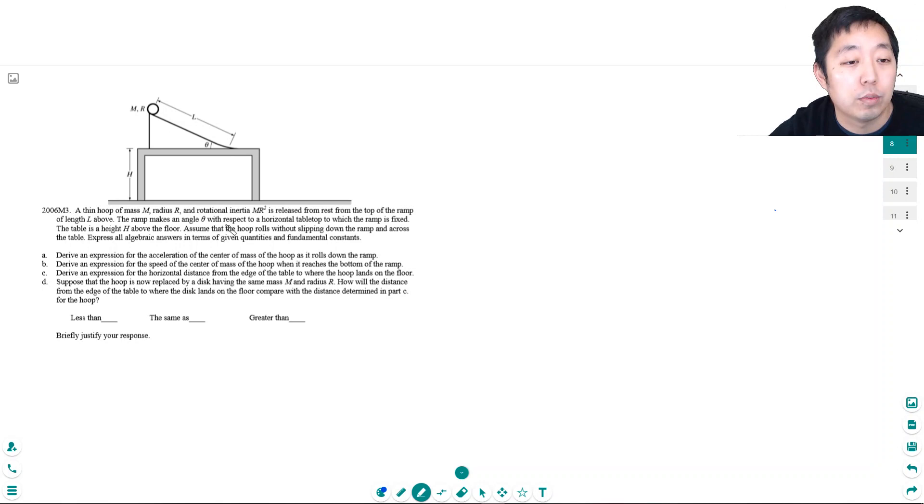We have a thin hoop of mass m, radius r, with rotational inertia mr squared. It's released from rest at the top of a ramp of length l. The ramp makes an angle theta with respect to the horizontal tabletop, which is at height h above the floor. Assume the hoop rolls without slipping down the ramp and across the table. Express all algebraic answers in terms of the given quantities and fundamental constants.